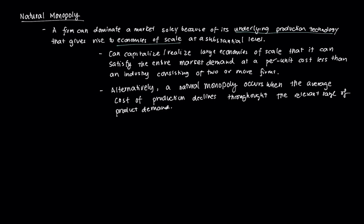If that's the case, the monopolist can capitalize and realize large economies of scale to be able to satisfy the entire market demand. A natural monopoly is a scenario wherein the firm or monopolist can feasibly satisfy the entire market demand at a per unit cost less than an industry consisting of two or more firms.